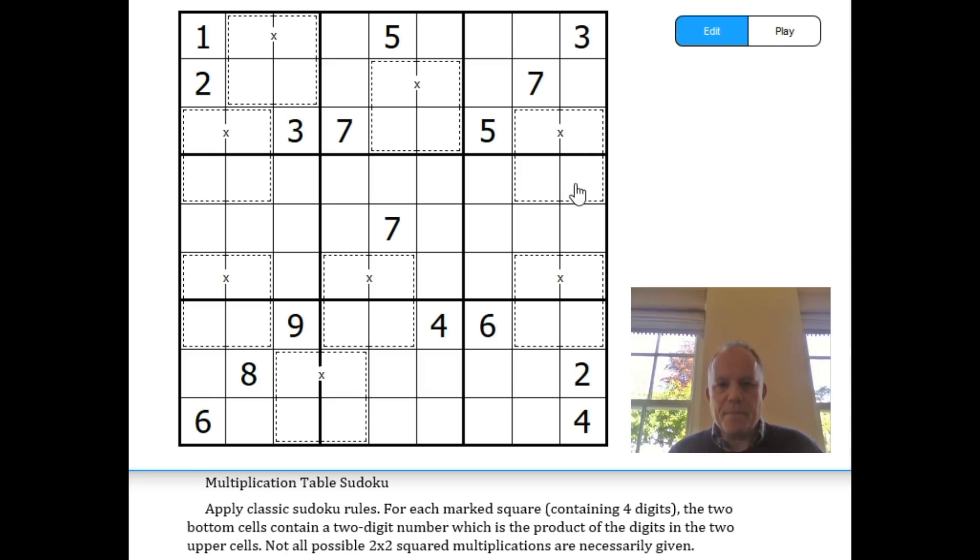The two top digits in each cage multiply together to give the two-digit number that appears in the bottom two cells. For instance, this one up here could be two times nine, giving you 18, with digits 1 and 8 in order down here. That constraint helps and is necessary to solve the puzzle.